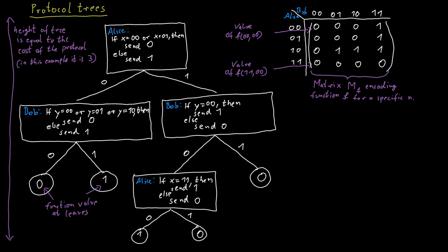Now we can think about what a protocol really does. We write down the communication protocol as a protocol tree and take the view of an outside observer who doesn't know x or y and only observes the communication between Alice and Bob. Before any communication has happened, we really don't know anything about the possible function value — we don't know anything about x or y, so everything is possible. But once Alice transmits her first bit to Bob, the outside observer can see that bit.